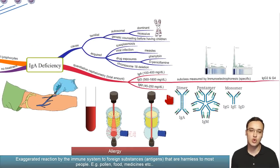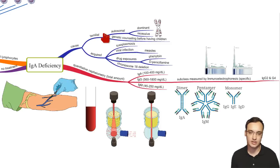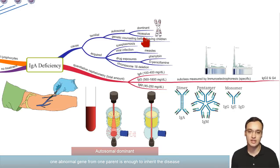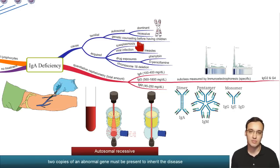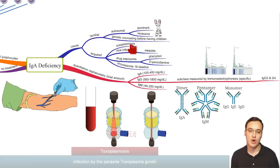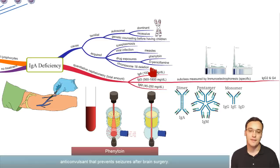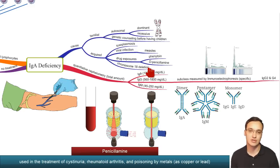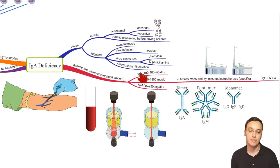Regarding causes, it can be familial — a genetic disease with either autosomal dominant or recessive inheritance; we are not quite sure which. Genetic counseling is important before having a child, since the child can inherit this disease. Acquired causes have also been identified by researchers in rare cases, including toxoplasmosis, viral infections like measles, drug exposure like phenytoin or penicillamine, and chromosome 18 deletion.